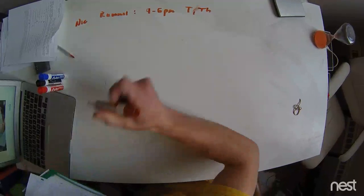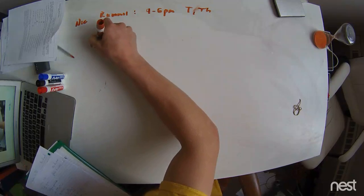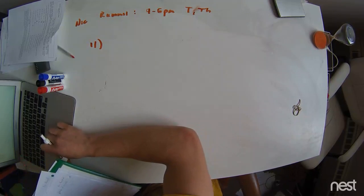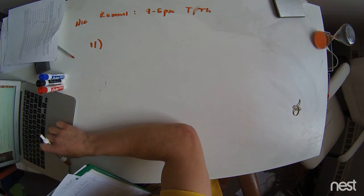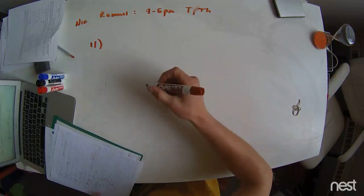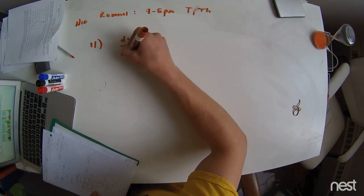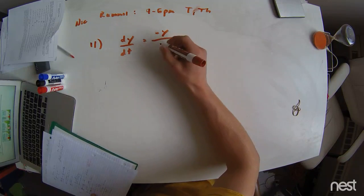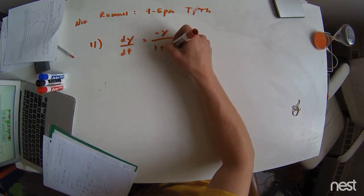We're going to be going through problems. This is going to be problem 11. I'm just going to pull out the problem so I'm making sure I'm solving everything correctly. dy/dt equals negative y over 1 plus t.